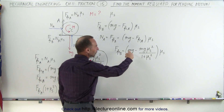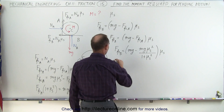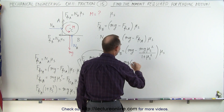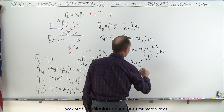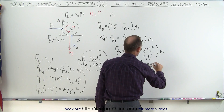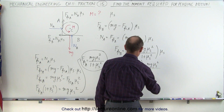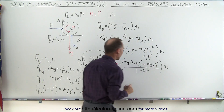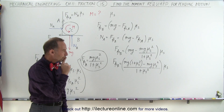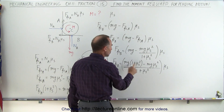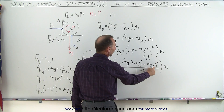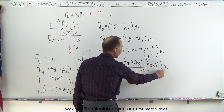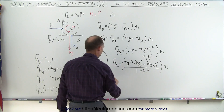Writing all this over a common denominator, the friction force at B equals mg times 1 plus mu sub s squared minus mg mu sub s squared, all divided by 1 plus mu sub s squared. Notice that the mg mu sub s squared terms cancel, and we're left with friction force at B equal to mg mu sub s divided by 1 plus mu sub s squared.